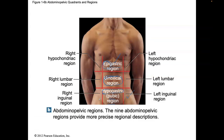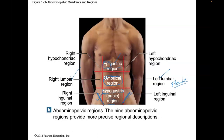Then we have a left inguinal region and a right inguinal region — right here at the inguinal ligaments. We have a left lumbar and a right lumbar; sometimes the lumbars are interchangeable with the term flank, so they can be called left flank and right flank. The only regions left are the left hypochondriac and the right hypochondriac. Chondro means cartilage, hypo means under — so right under the rib cartilage you have the right hypochondriac and the left hypochondriac.